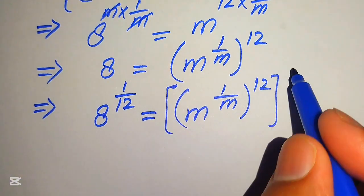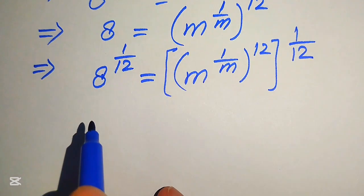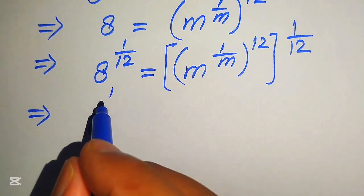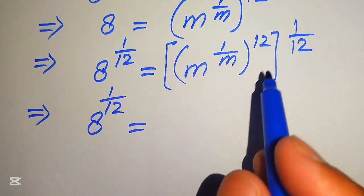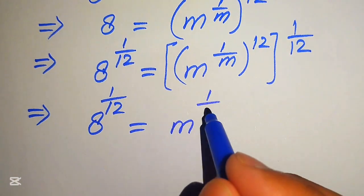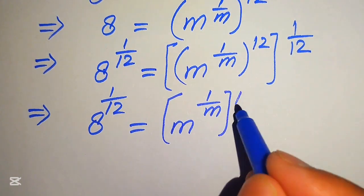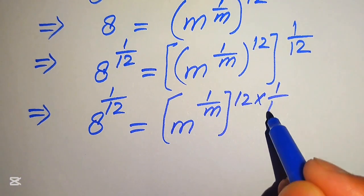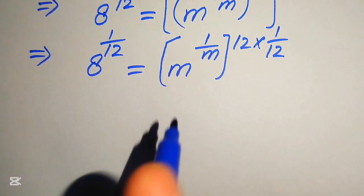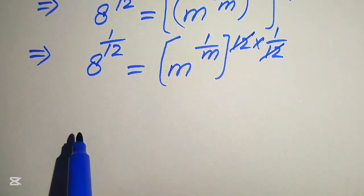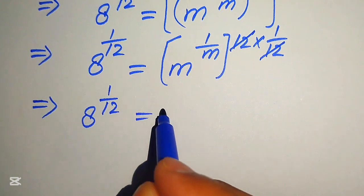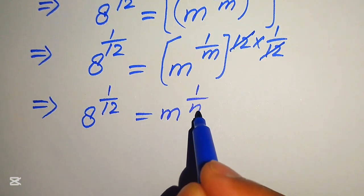After taking the 12th root, we have m to the power of 1 over m, whole power 12, whole power 1 over 12 on the right side, and 8 to the power of 1 over 12 on the left. We apply the exponent law again: 12 multiplied by 1 over 12 cancels out, giving us 8 to the power of 1 over 12 equals m to the power of 1 over m.